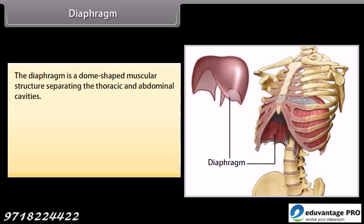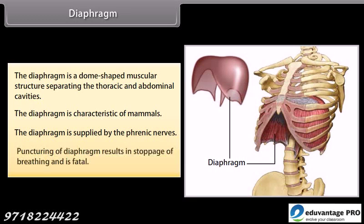The diaphragm is a dome-shaped muscular structure separating the thoracic and abdominal cavities. The diaphragm is characteristic of mammals and is supplied by the phrenic nerves. Puncturing of the diaphragm results in stoppage of breathing and is fatal.